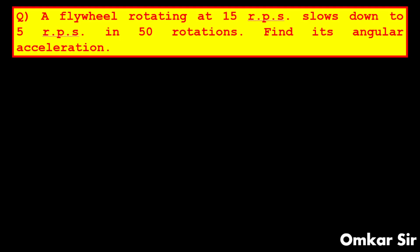Okay, so now in this question a flywheel rotating at 15 rotations per second slows down to 5 rotations per second in 50 rotations. Find the angular acceleration. So we need to find out the value of alpha. First we will write what we have given here. They have given us rotations per second: 15 rotations per second and 5 rotations per second.